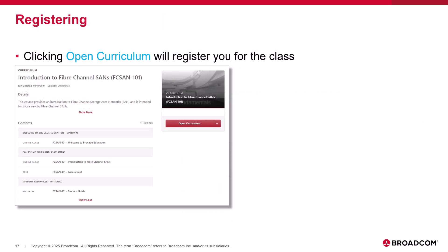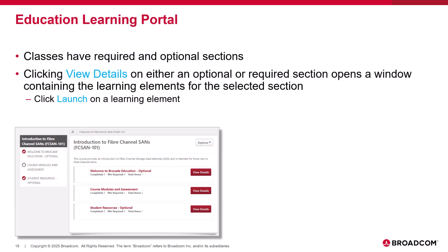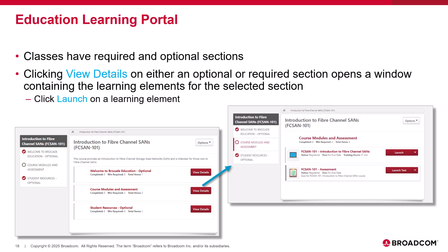Clicking on a class will open the details for that class. In this example, we see the Introduction to Fiber Channel SAN's FCSAN 101 course. To register and take the course, simply select Open Curriculum. Classes have required and optional sections. Clicking View Details on either an optional or required section opens a window containing the learning elements for that selected section. Click Launch on the Learning Element to begin that section.